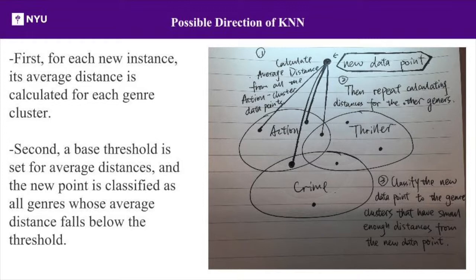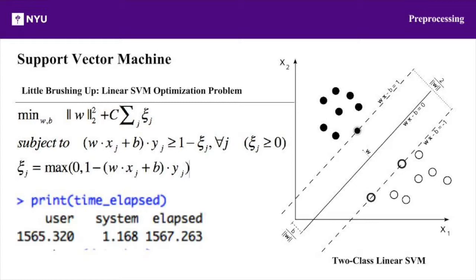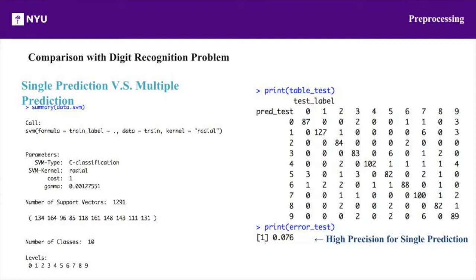The second algorithm we used is support vector machine. An SVM model is a representation of the examples as points in space, mapped so that the examples of separate categories are divided by a clear gap that is as wide as possible. New examples are then mapped into the same space and predicted to belong to a category based on which side of the gap they fall on. We did an assignment on digit recognition before, and the precision of predicting the digits is pretty high using SVM.